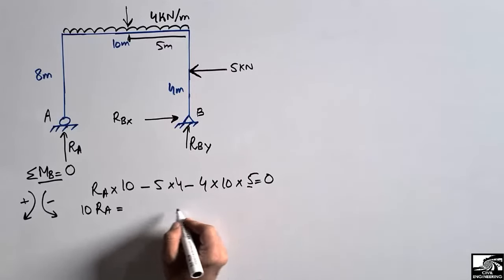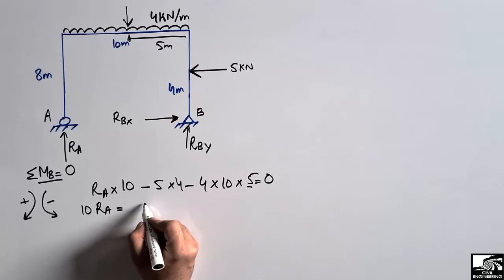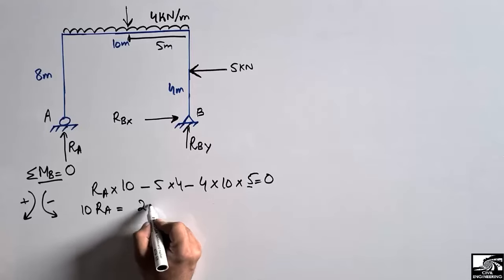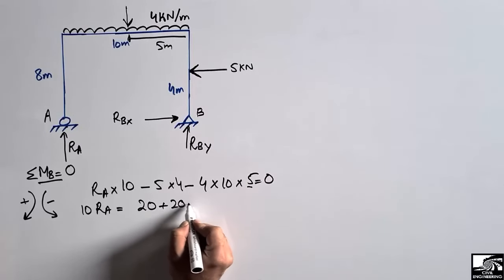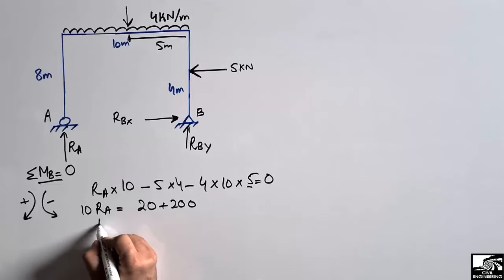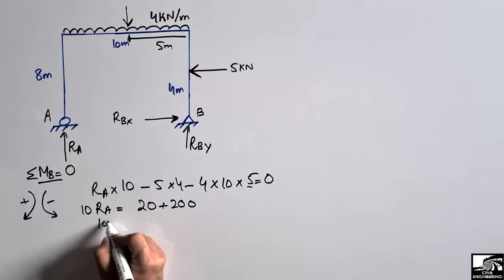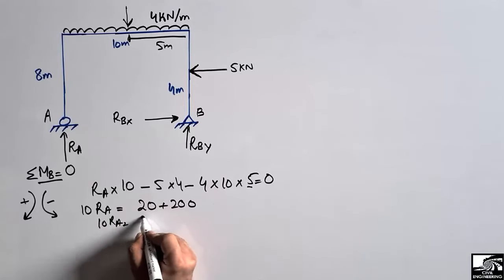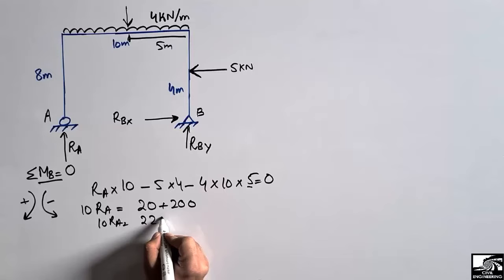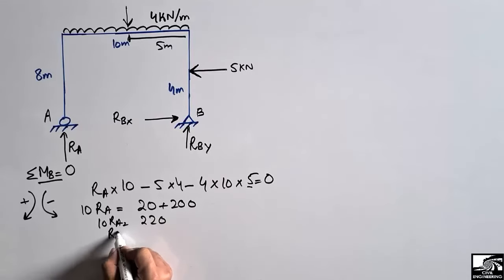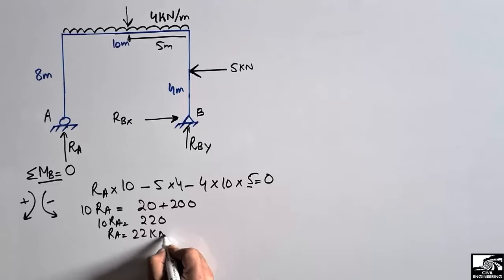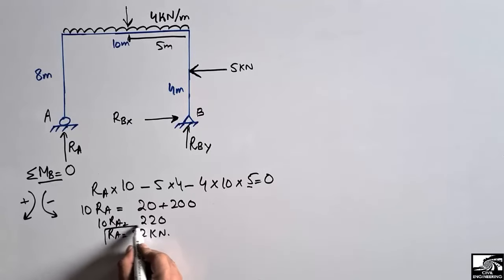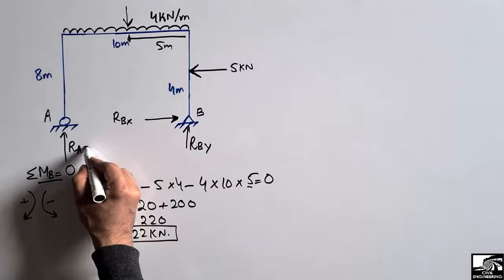Solving the equation: 10 RA = 20 + 200 = 220, therefore RA = 220 / 10 = 22 kN. So the reaction at A is 22 kilonewtons.